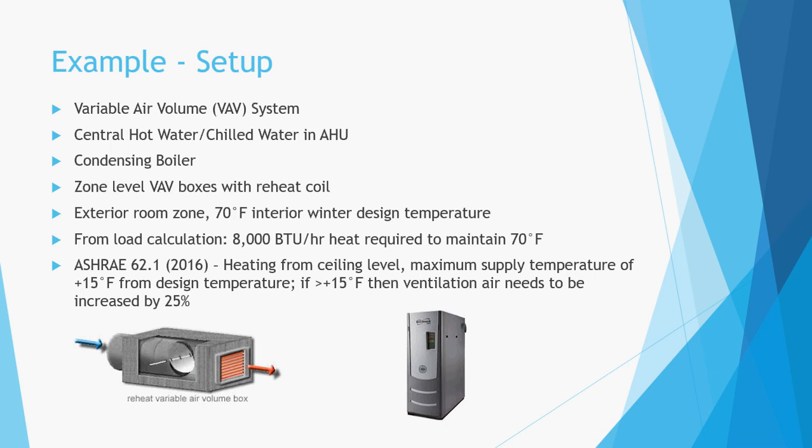Let's assume we have an exterior room with a dedicated VAV box and that the interior winter design temperature is 70 degrees Fahrenheit. A load calculation determined that 8,000 BTUs per hour is required to maintain the room at 70 degrees. ASHRAE 62.1 has a requirement that the supply air temperature in heating mode can only be a maximum of 15 degrees above the design set point. If the supply temperature is greater than 15 degrees above set point, the designer needs to increase ventilation air by 25 percent. So let's calculate the airflow and supply air temperature for this room.